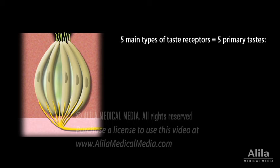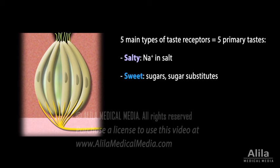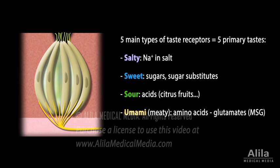There are five main types of taste receptors corresponding to five major taste sensations in humans. Salty receptors detect sodium and salt, sweet receptors bind to a number of sugars and sugar substitutes, sour receptors are activated by acids, umami or meaty taste is elicited by amino acids, in particular glutamates, and bitter taste is associated with spoiled foods, natural toxins, and substances such as quinine and caffeine.